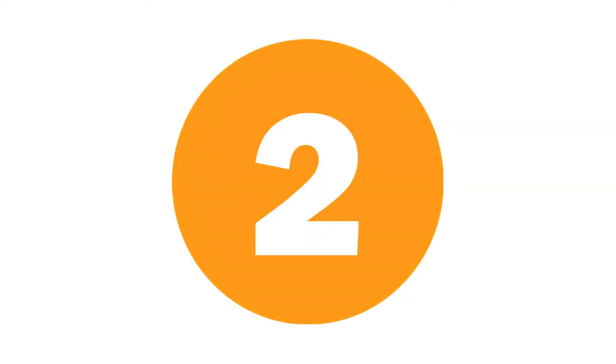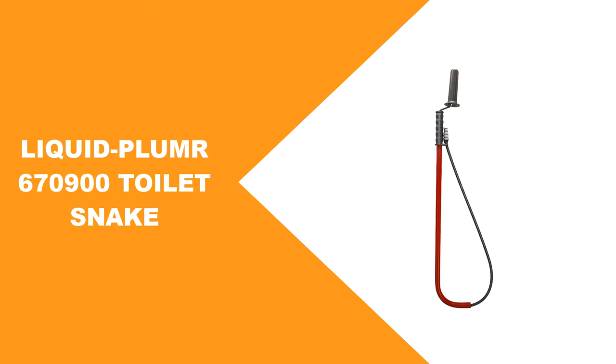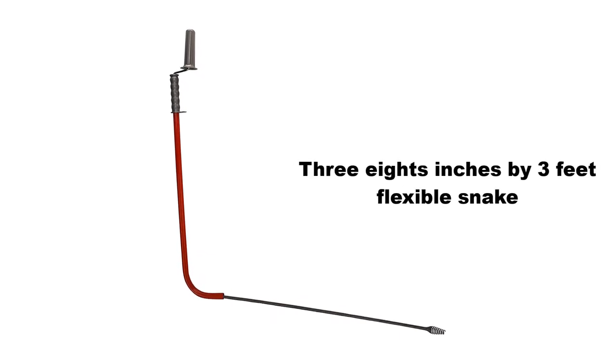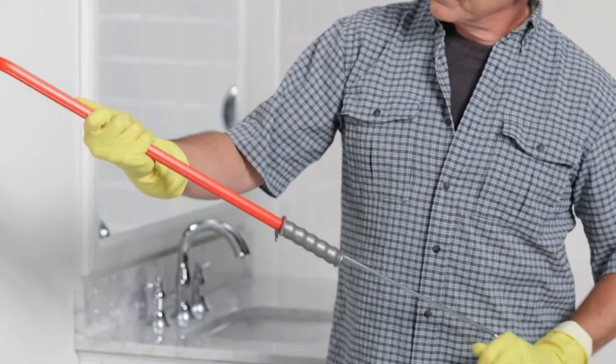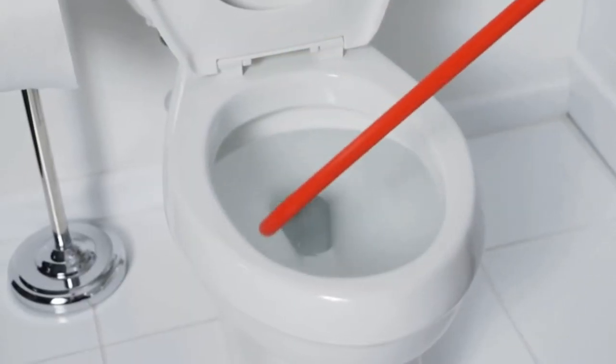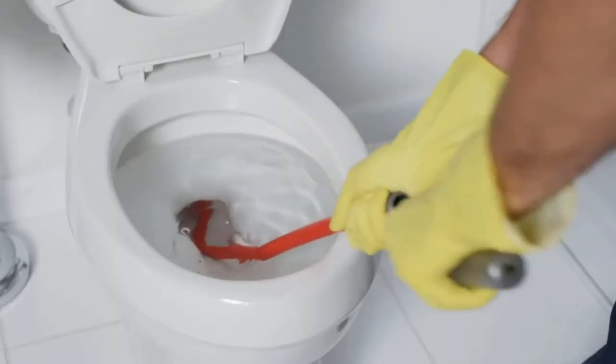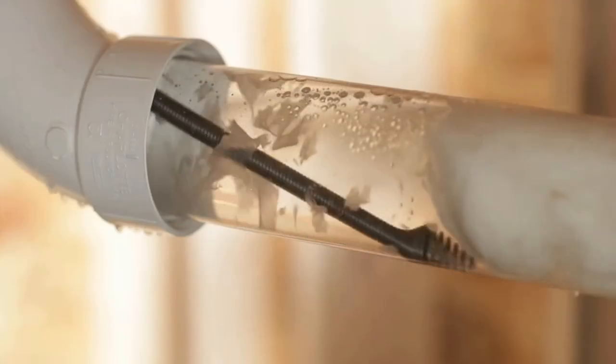This toilet snake comes with a 3/8 inches by 3 feet flexible snake. It has a vinyl sleeve that protects your toilet from scratches and damages. An easy grip handle can be very useful while cleaning the toilet bowls properly. You can apply enough force to clean any large obstacle from your drain. It has a flexible cable that can reach deeper inside your toilet.